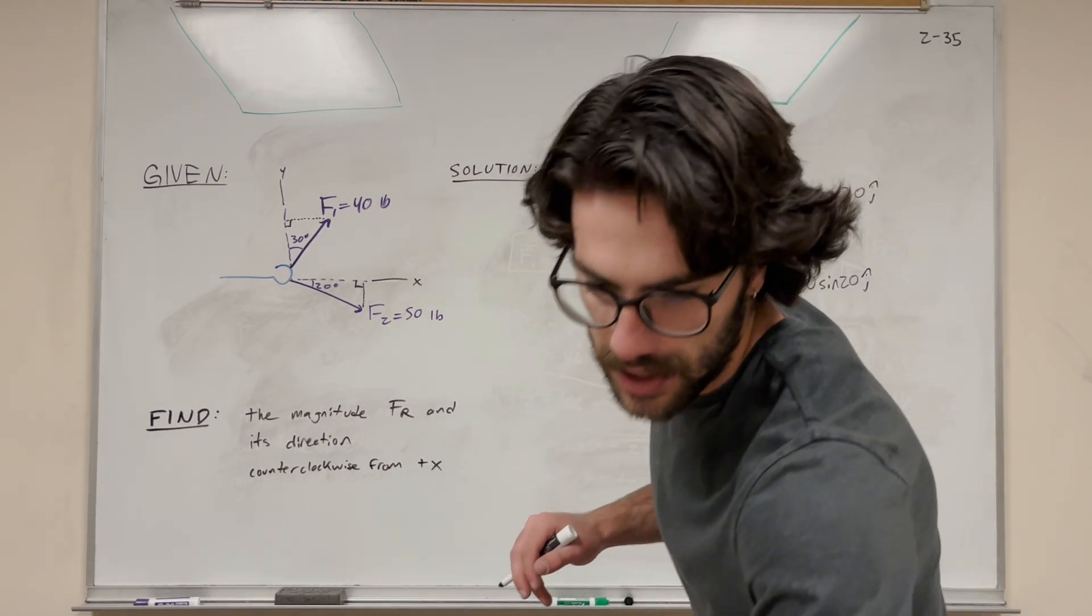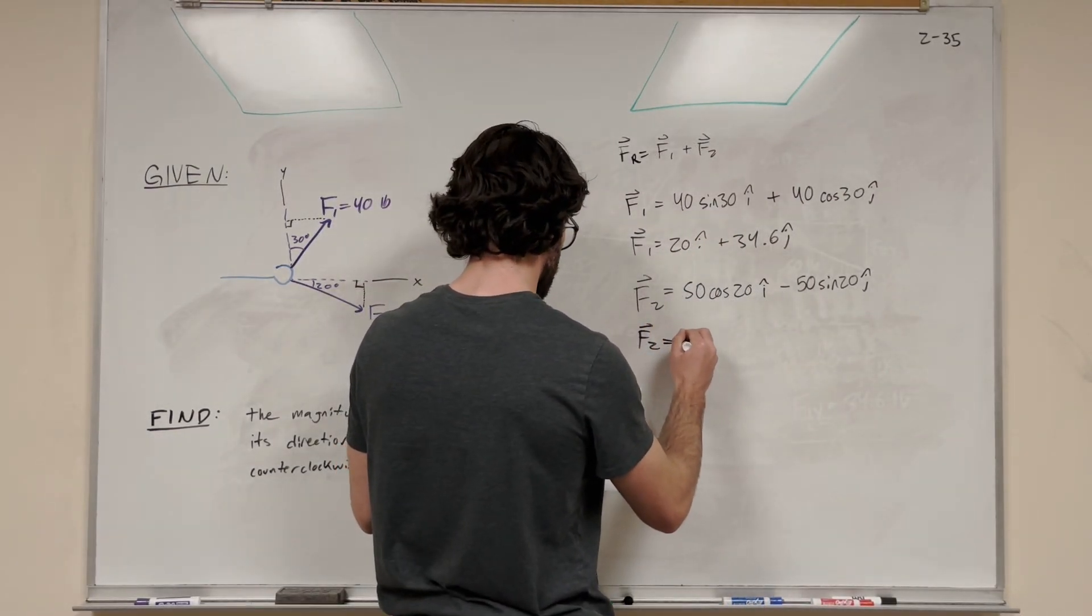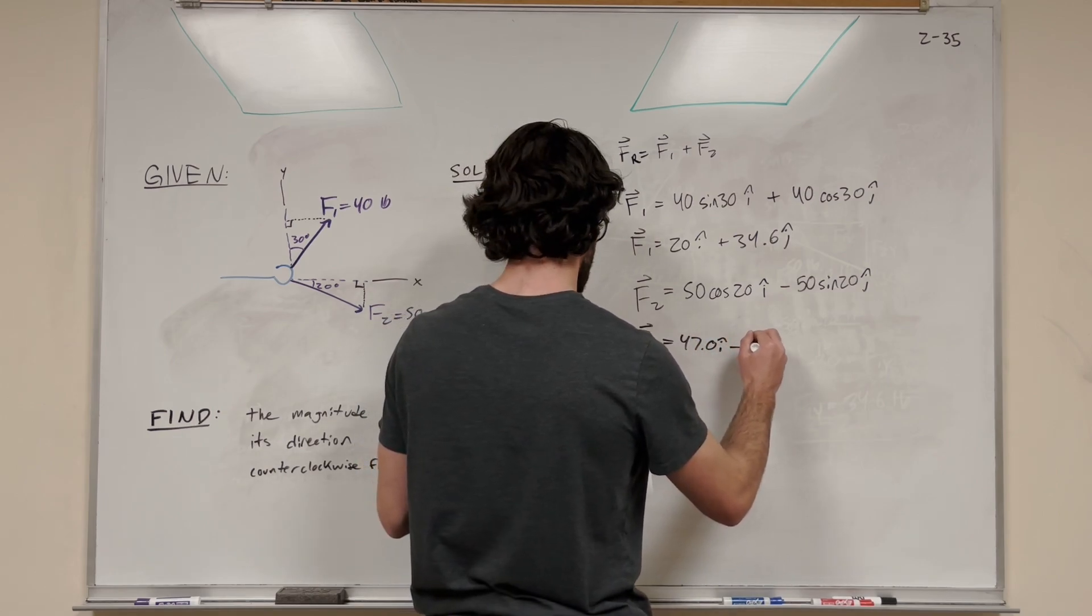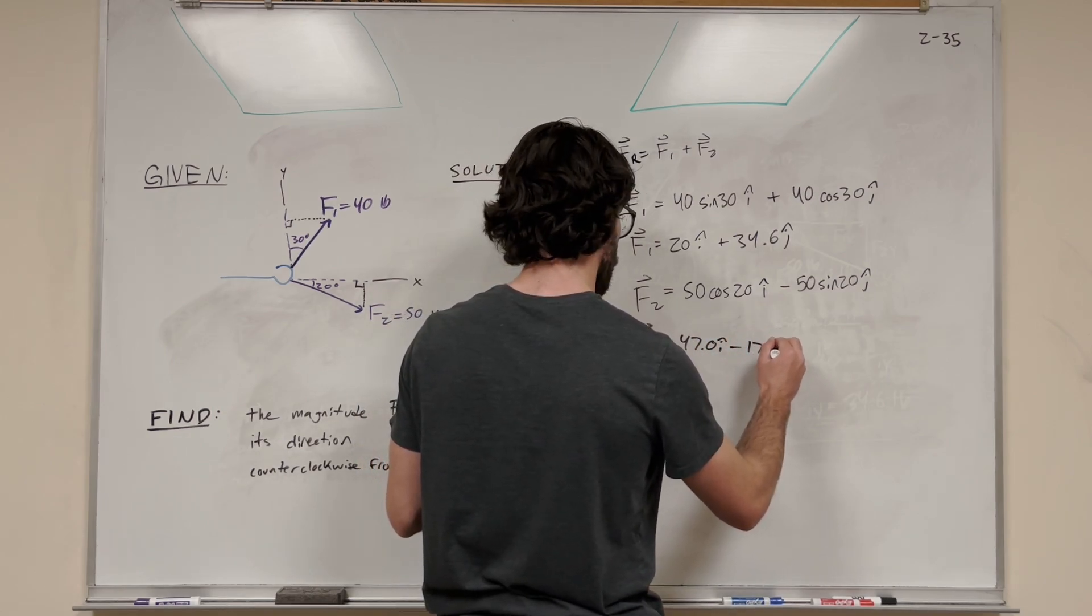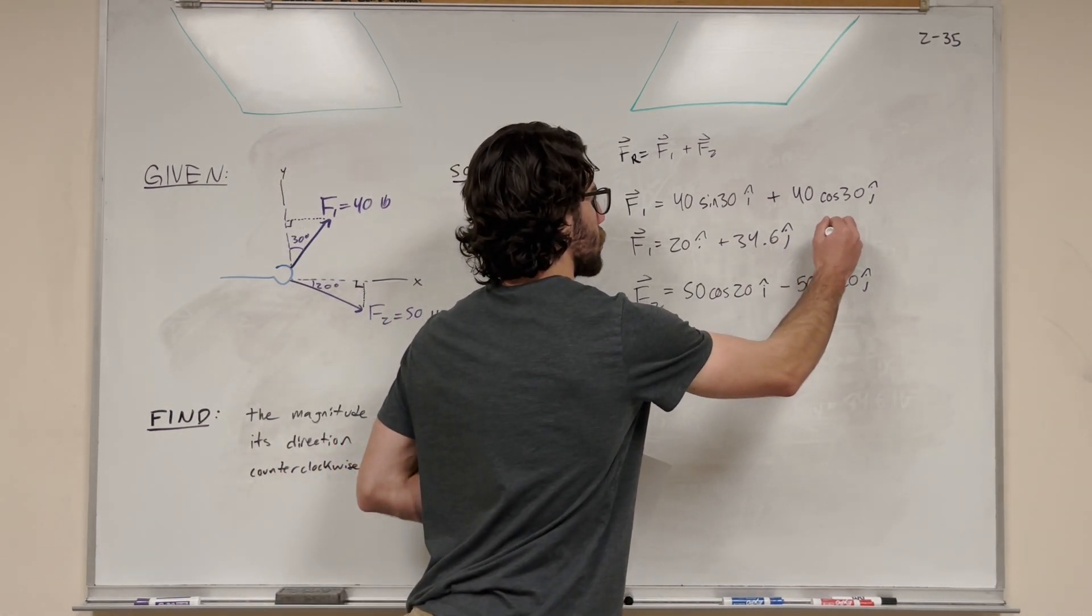Now we're going to solve for this. So this is equal to 47.0i minus 17.1j. These are in pounds.